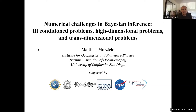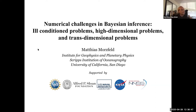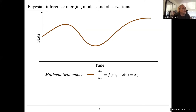Thank you everybody for coming and zooming in. I'm very happy to see Alexander Chorin here, who zooms in from Berkeley and who has been very influential in my postdoc time — much of what I show you here is heavily influenced by working with him for many years. I will talk about Bayesian inference, and mostly the numerics of Bayesian inference. It's not directly connected to an earth science or geophysical application, but I will show a few examples towards the end. The challenges are in ill-conditioned problems, high-dimensional problems, and trans-dimensional problems — so I'm only talking about interesting problems, not the ones that are easy to solve.